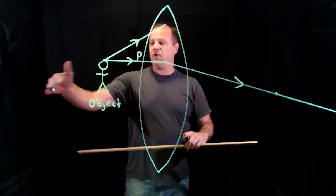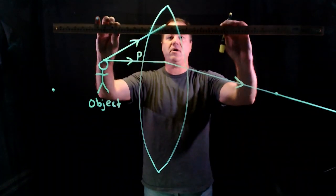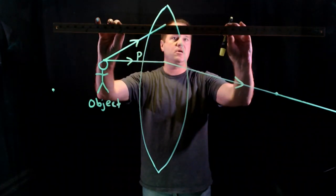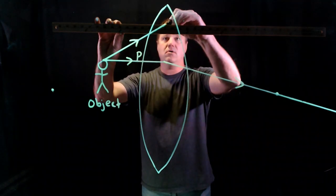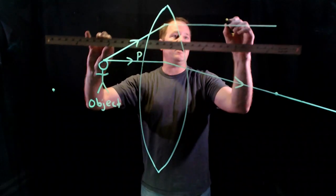And then F rays coming from the focal point go out parallel. Parallel to what? The principal axis. So I draw a horizontal line coming out from the lens.